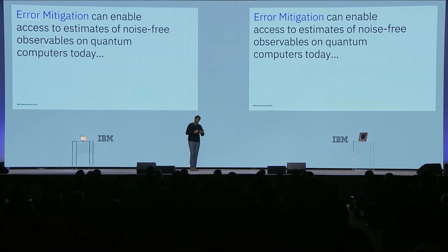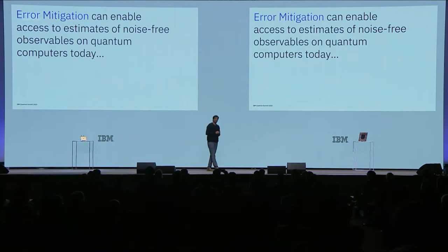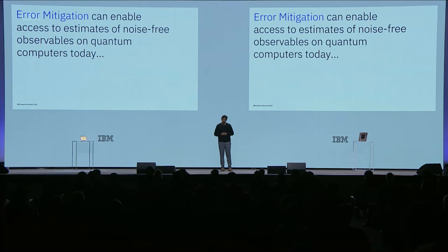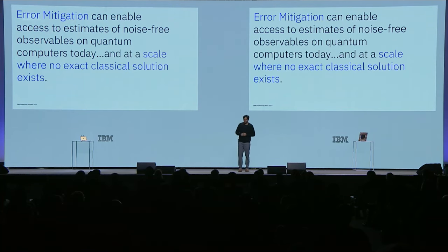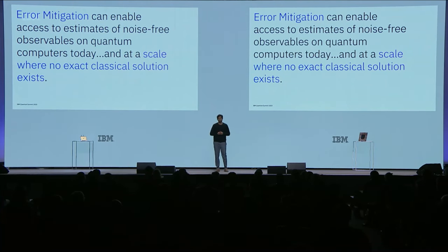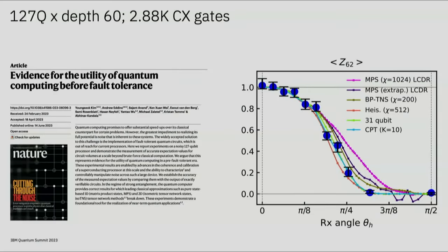Thanks, Ismail. So, we want to run 5,000 gate circuits, but we also want to access reliable, accurate computations from these circuits within the next one year. How do we do this in the absence of fault tolerance? The key is a collection of techniques that we refer to as error mitigation — methods that can enable access to noise-free observables on quantum computers today. And as we showed earlier this year, this can be done at a scale that's in general beyond exact classical simulation. This was work that appeared on the cover of Nature in June this year, where we presented evidence for the utility of quantum computing before fault tolerance. The largest circuits considered had 127 qubits with a circuit depth of 60, using up to almost 3,000 gates, which is in general at a scale beyond exact classical simulation.